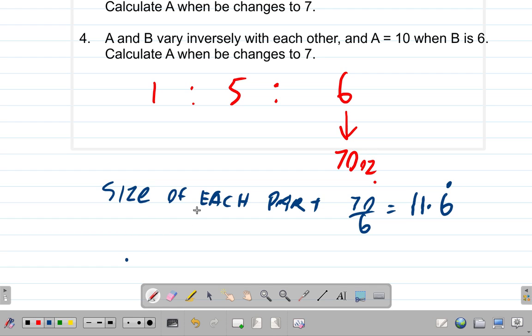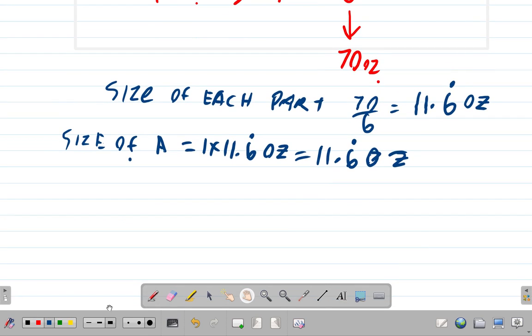That's the size of each part. 11.6 ounces. So the size of A is going to be 1 times 11.6 oz. So that's just 11.6 oz. So the amount of ingredient A could be 11.6 oz for ounce.